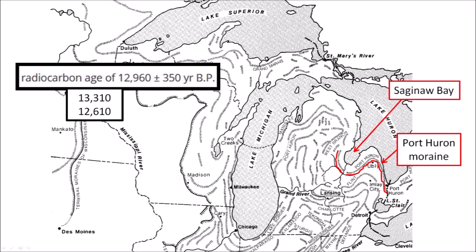Of course, a skeptic can quibble and say 12,960 is just an estimated value. The uncertainty of plus or minus 350 years means that the date can range from 13,310 to 12,610. If the ice was gone by 13,310, Saginaw Bay would not have been covered by ice 12,900 years ago at the time of the impact. This example illustrates the difficulty of trying to prove that Saginaw Bay was covered with ice at the time of the impact.